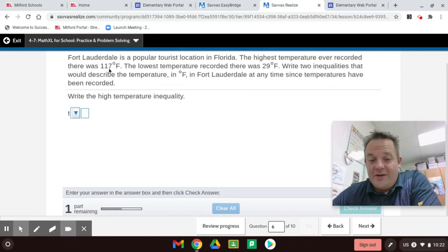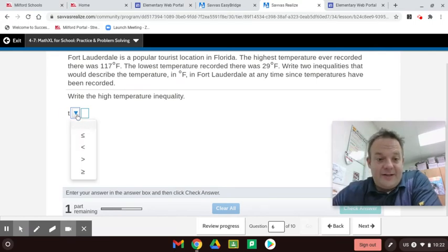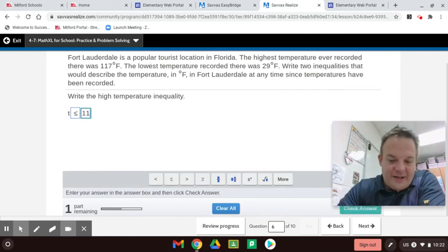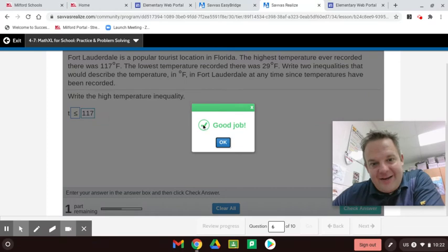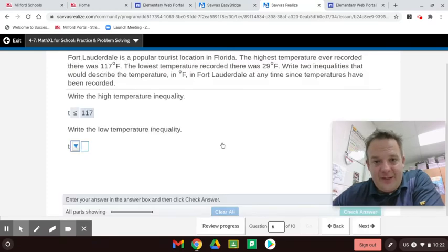Write the high temperature inequality. So, look, guys, the highest temperature ever recorded was 117. That means it was 117. It includes 117, but not more. But it could include temperatures that were less. So, the temperatures at Fort Lauderdale are less than or equal to 117. Man, if it were 117, we'd all be baking there in Fort Lauderdale. So, hey, maybe I'll see you in Florida. I go every year, too.